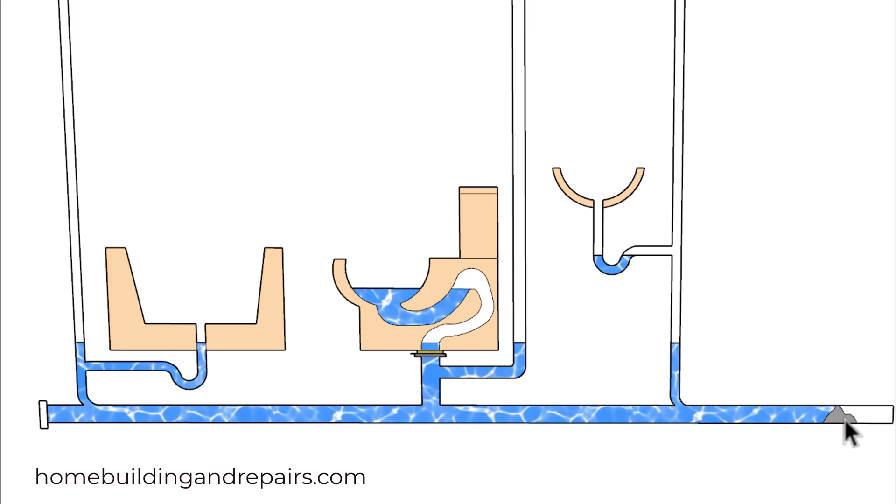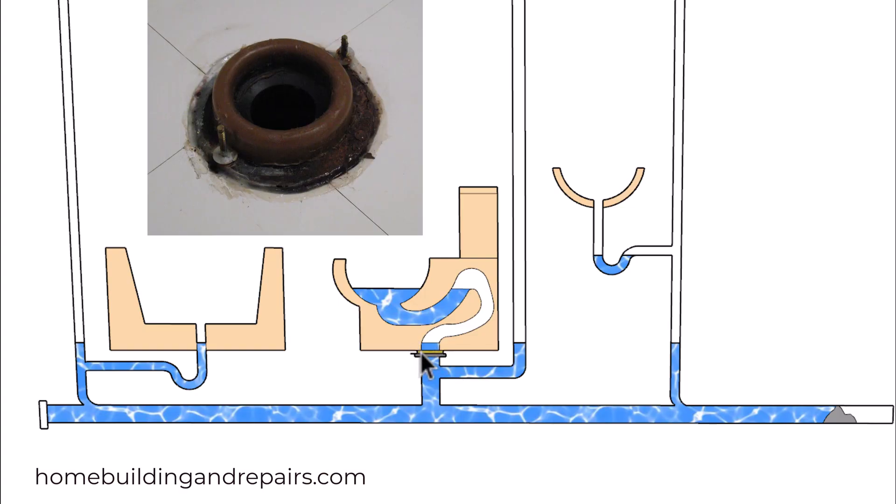However, if you do have a clog or a partial clog in the pipe, and you use your sink or your toilet or your bathtub, you're going to be filling the pipe up with wastewater. And this can put pressure on the wax ring connection and cause water to leak out of the base of your toilet.